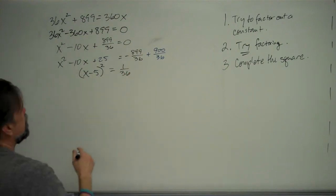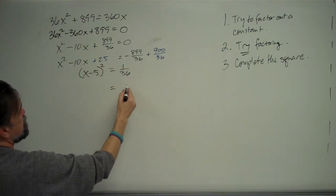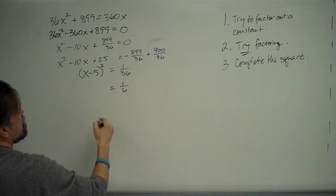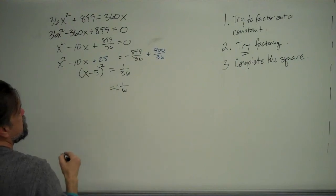Because now look at what we have. We have something squared equals 1 over 36. What's the square root of 1 over 36? 1 sixth. So that means this thing inside of here must be 1 sixth or negative 1 sixth.